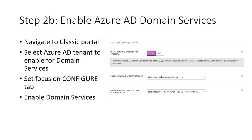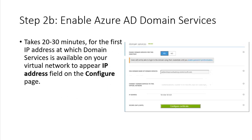Navigate to the portal, navigate to your Azure tenant, enable Domain Services, and set the focus on the configuration tab. Enable the Domain Services and move on — the next part will take up to 30 minutes.